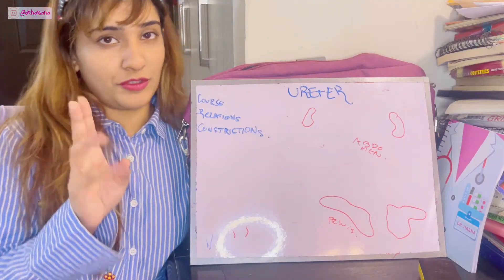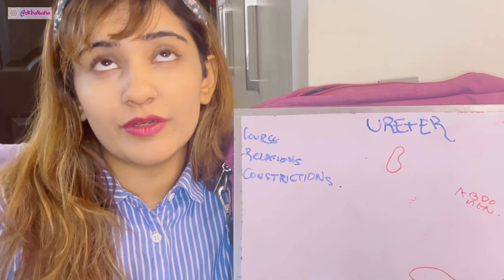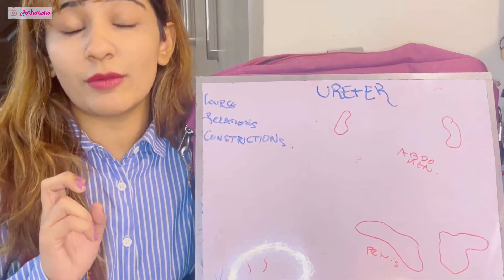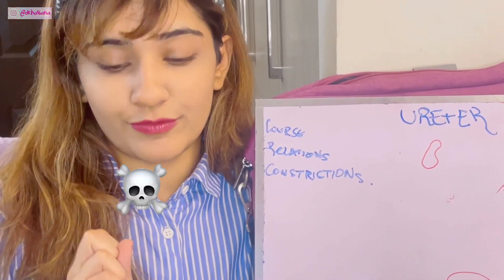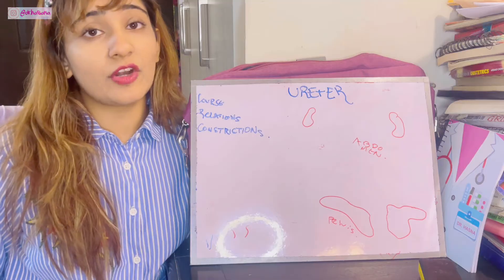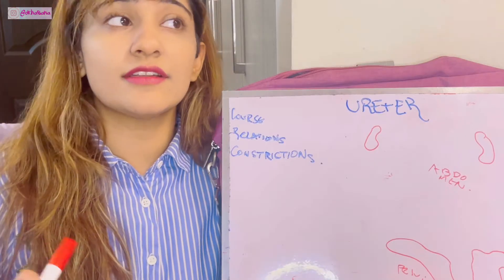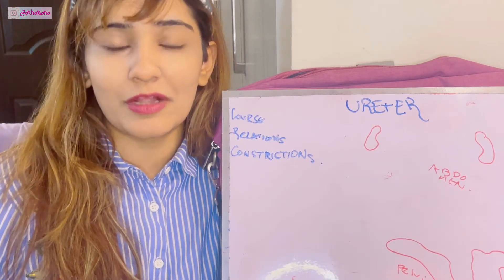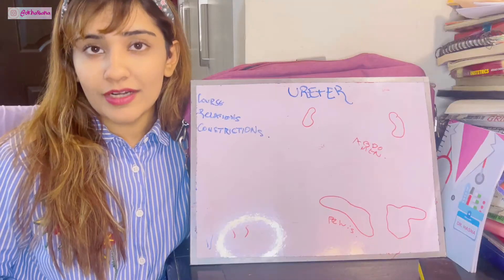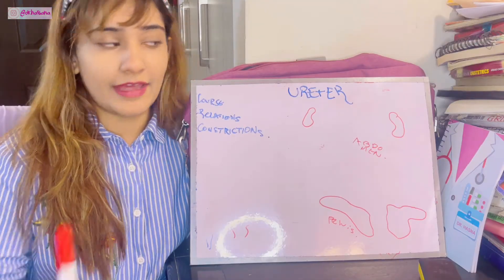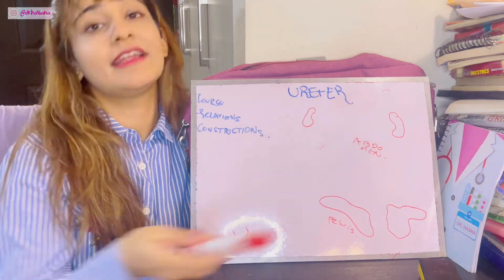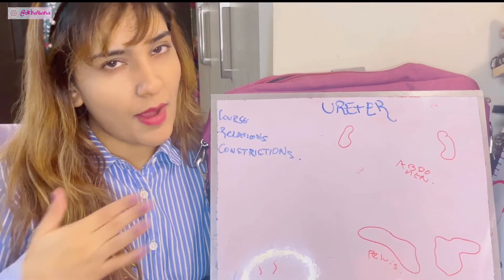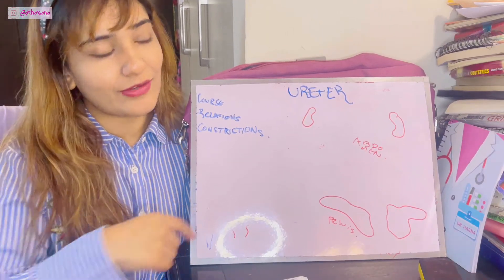There are two problems with the ureter. We're very blessed to have two ureters, but that's where the problem stems from — because there are two, on the right and the left side. Because there's a difference between the right and left sides of the organs in the abdominal wall, there are going to be a lot of relations to learn, and they're different for each side. I'll make all of that simple.